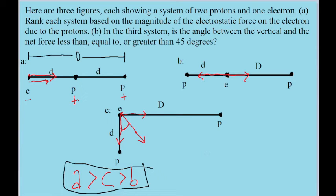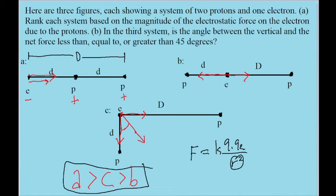To discuss this part of the problem, let's think about Coulomb's law. Coulomb's law states that the force between two charged particles is equal to the Coulomb constant times the product of the two charges, divided by the distance between them squared. Since the magnitude of the charges themselves aren't changing, the only thing that is changing here are the distances — big D and little d. The force is inversely proportional to the square of the distance, meaning that as the distance increases, the force becomes weaker, and if two particles are closer together, the force is stronger.